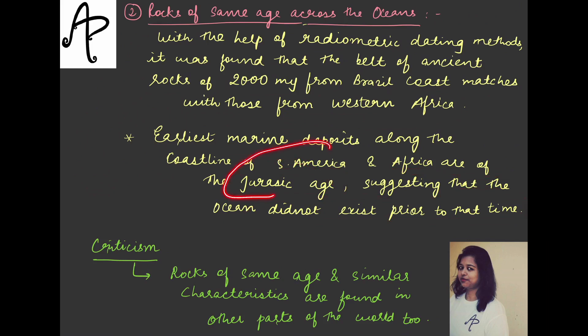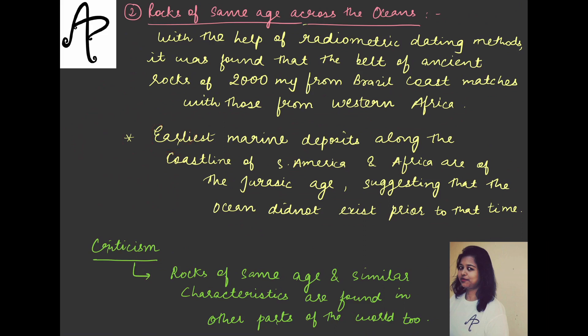If the deposits are of Jurassic age, please check the geological time scale covered in a previous lecture so you can make sense of these eras and periods. This directly suggests the ocean did not exist prior to that time, which raises a question. Rocks of the same age with similar composition found across the ocean suggest that earlier these landmasses were combined and this ocean was not existing in between.